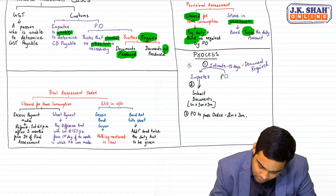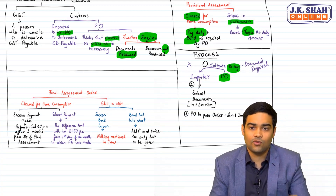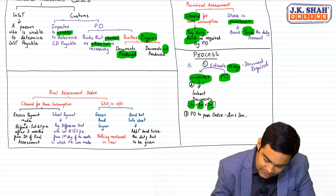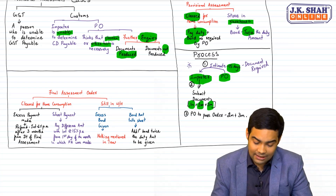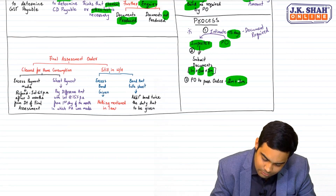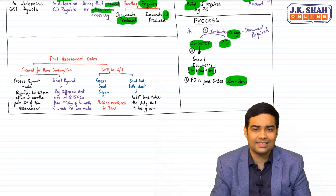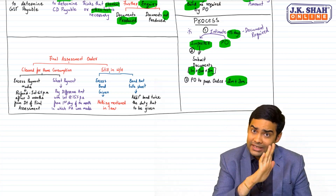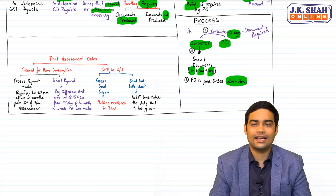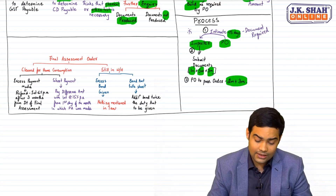The process: Step one - the proper officer will intimate me within 15 days specifying the documents required. Step two - the importer has to submit all the documents within one month, plus one extension of three months, plus one more extension of three months. The time limit for the proper officer to pass the order is two months plus one extension of three months, starting from the day the time limit for submitting documents expires.